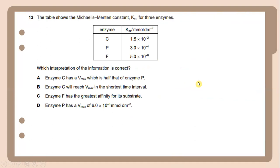The table shows the measured Michaelis constant Km for three enzymes. Which interpretation of the information is correct? Enzyme F has the greatest affinity for its substrate.